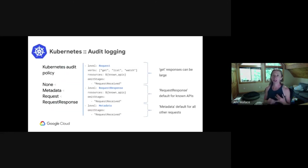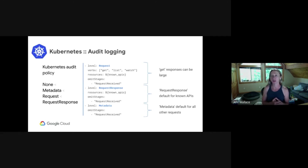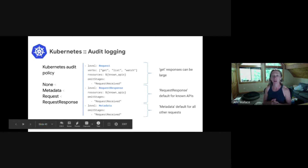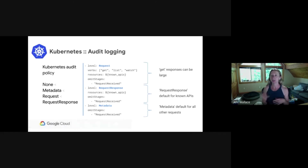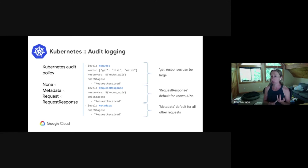Kubernetes audit logs are actions taken in Kubernetes. A given request will generate events at multiple points of the lifecycle: when a request is received, when a response is started, and when a response is completed. The Kube API server processes these events according to your audit logging policy and then logs them. Kubernetes offers four audit log levels: None — nothing is logged; Metadata — logs metadata only, including requesting user, timestamp, resource, and verb; Request — logs metadata plus a request body; and RequestResponse — logs the request and response plus the request response body.